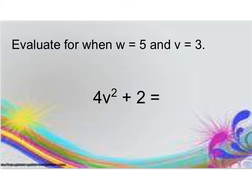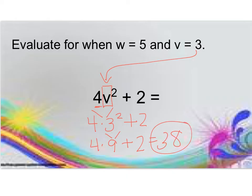Now we have an exponent and a coefficient. Remember, this is 4 groups of v squared or 4 times v squared. V is worth 3. A common mistake is to say this is 43 squared, but that's incorrect. I have 4 groups of 3 squared or 4 times 3 squared. Following order of operations, I do exponents first: 3 squared is 9. 4 times 9 is 36. 36 plus 2 is 38.